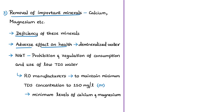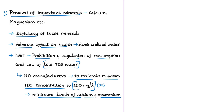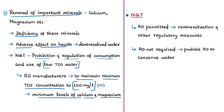An additional reason for the NGT order is that RO systems also remove important minerals vital for human health, such as calcium and magnesium, adversely affecting the health of consumers of demineralized water. Therefore, NGT ordered prohibition and regulation of low-TDS water consumption, and mandated that RO manufacturers maintain a minimum TDS concentration of 150 mg/L or at least maintain minimum levels of calcium and magnesium.